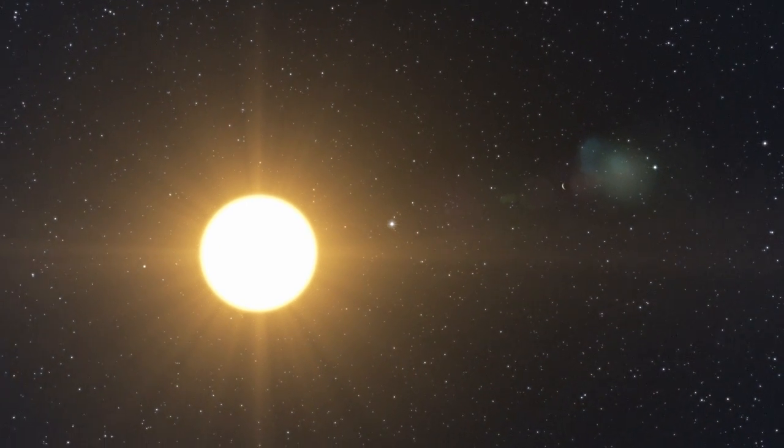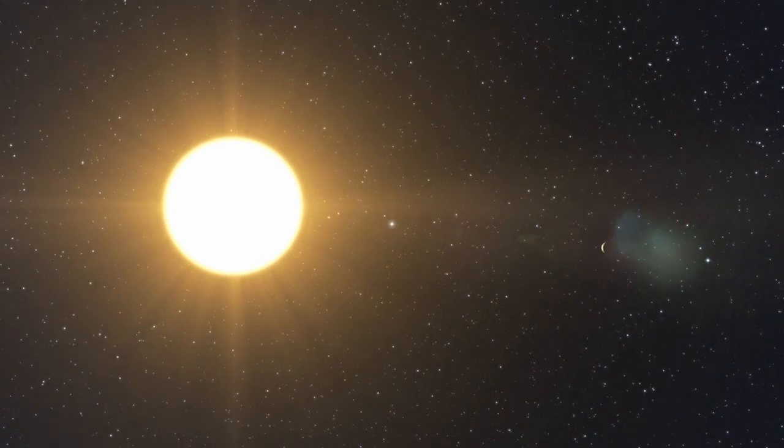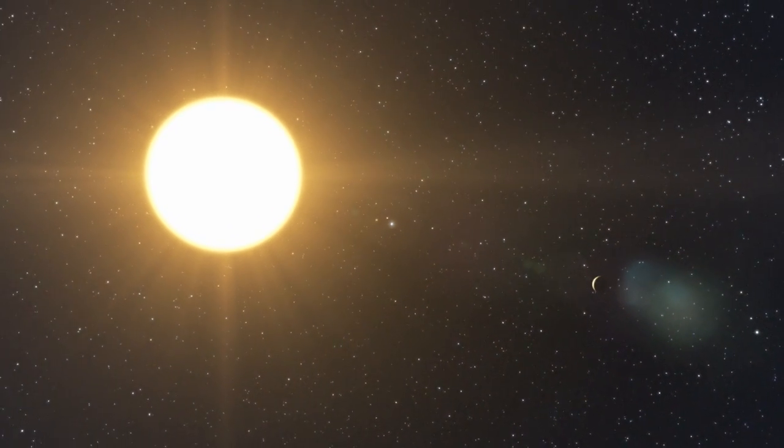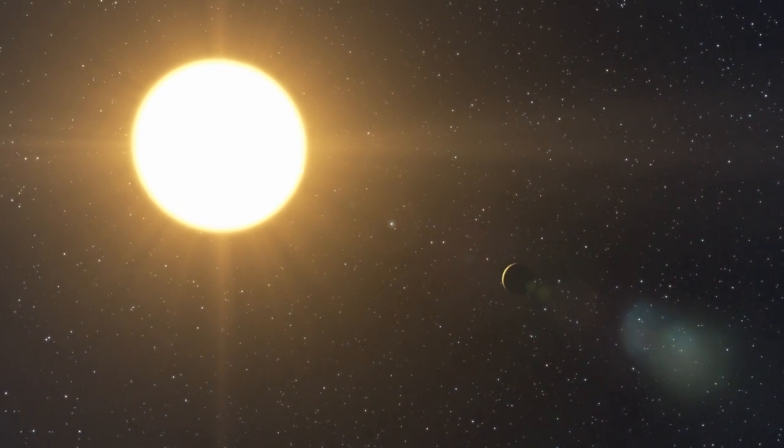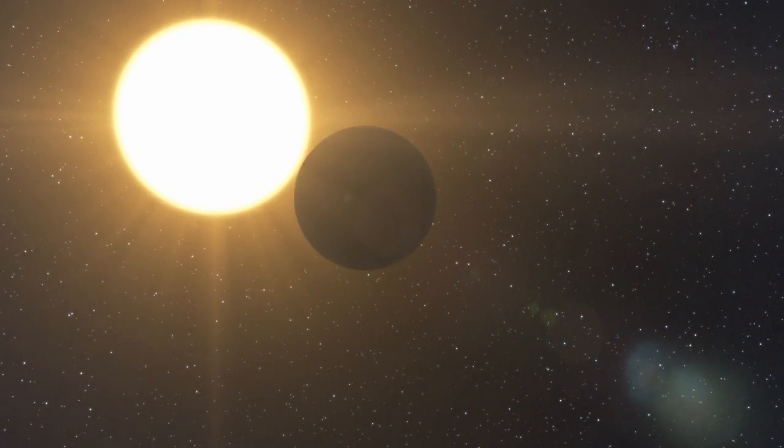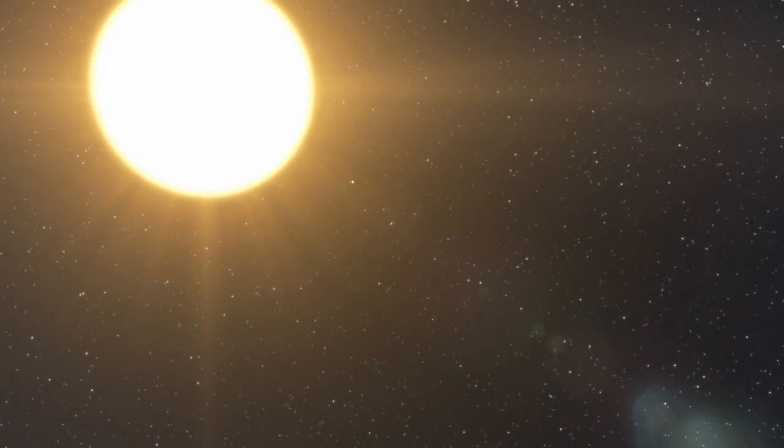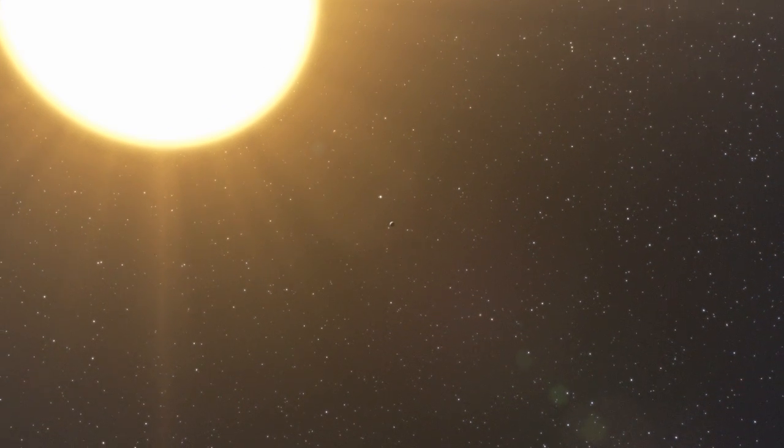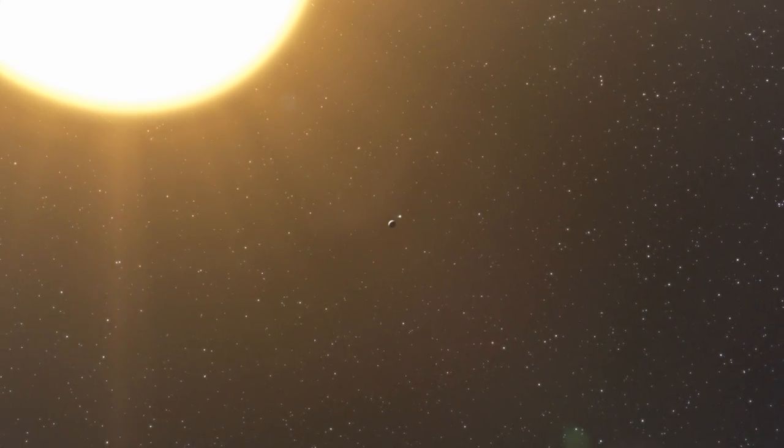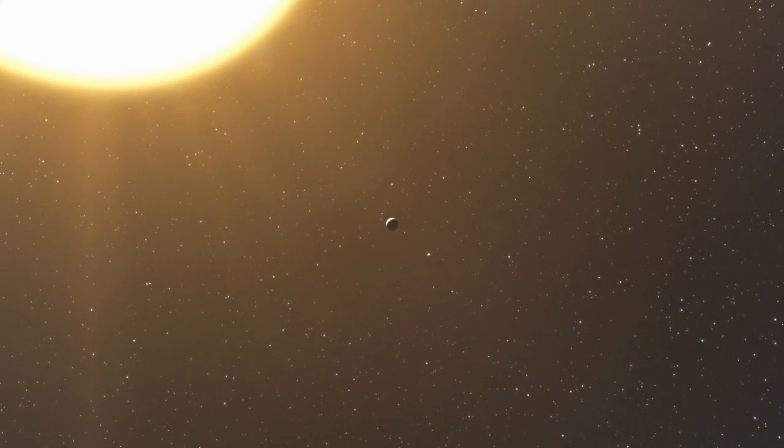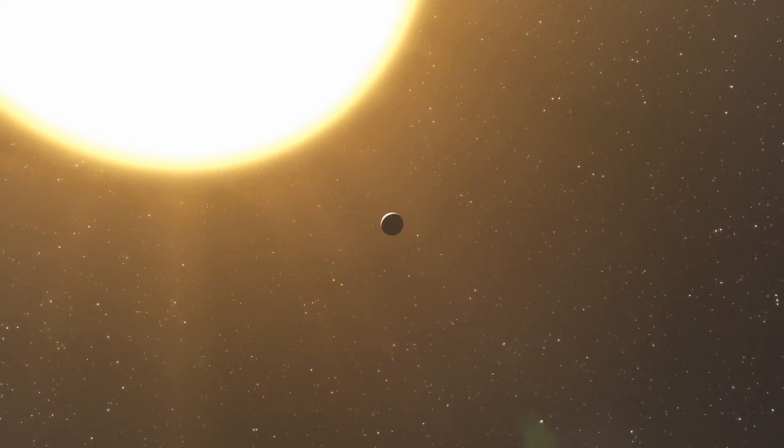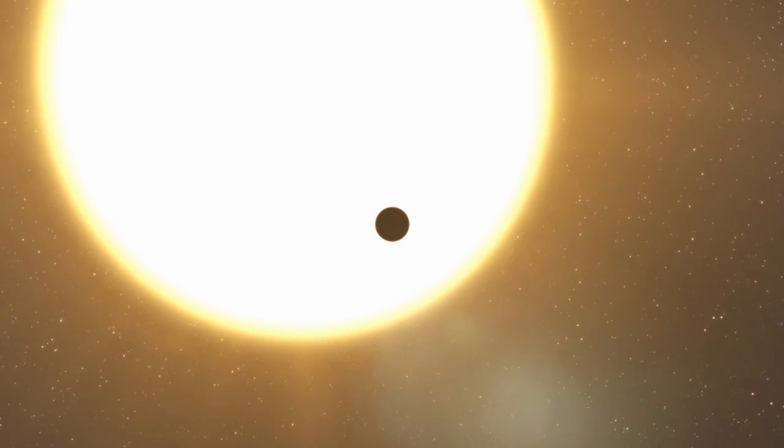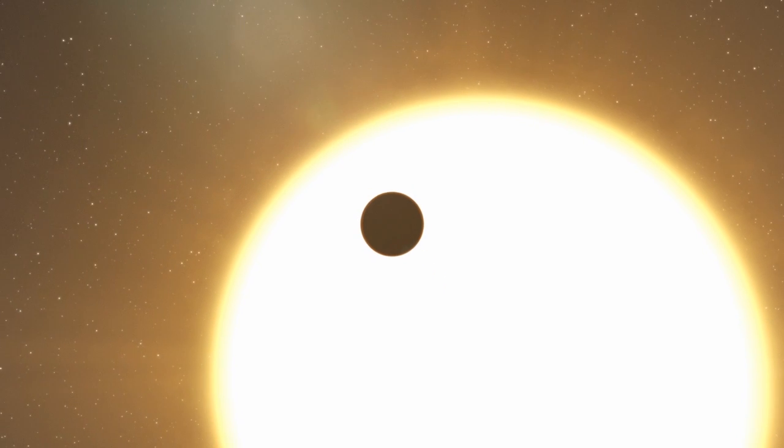The astronomers have also strong reason to believe that two other planets are present. One would be a Saturn-like planet orbiting in 2200 days. The other, having a mass of only about 1.4 times that of the Earth, would be the least massive exoplanet ever discovered. This suspected planet is very close to its host star, and so it's likely to be very hot. One year on this planet lasts only 1.18 Earth days.